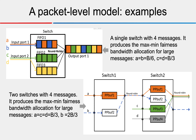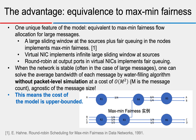Consider two examples. In the first example, a single switch with four messages: messages A and B come from the same input port and go to the same output port, while C and D come from different input and output ports. For very large messages, the bandwidth allocation can eventually equal the max-min fairness bandwidth allocation. A second example with two switches and four messages yields the same conclusion. This observation suggests our model may be equivalent to the max-min fairness model — and indeed it is.